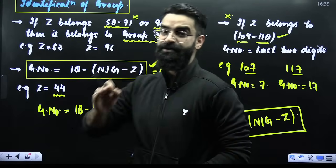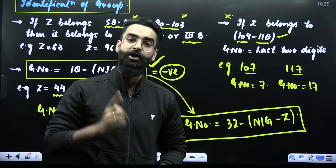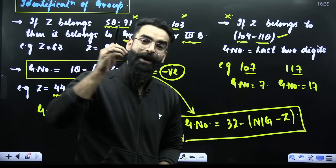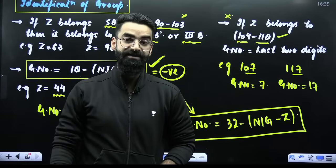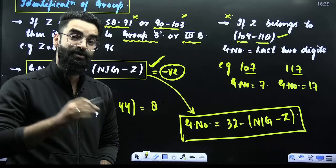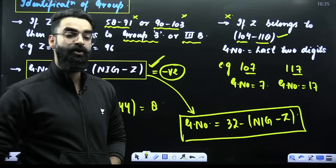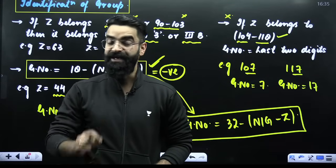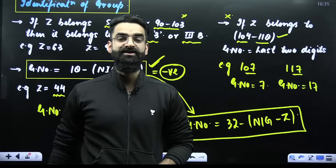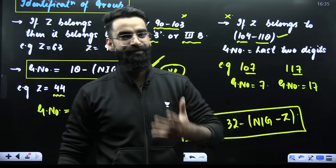So my dear students, this was a quick session with the help of which you can decide the period number, group number, and block of each and every element of the periodic table — whether its configuration is given or its atomic number is given. I would want you to watch this video again so you can remember and take note of every single thing. I will keep coming up with small hacks and tricks for different chapters.